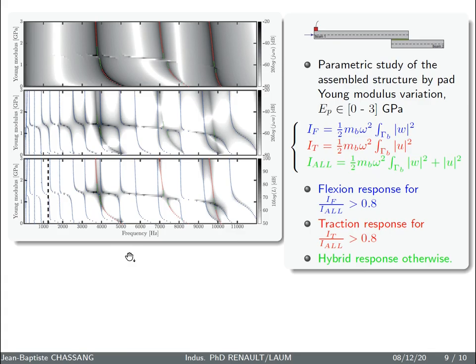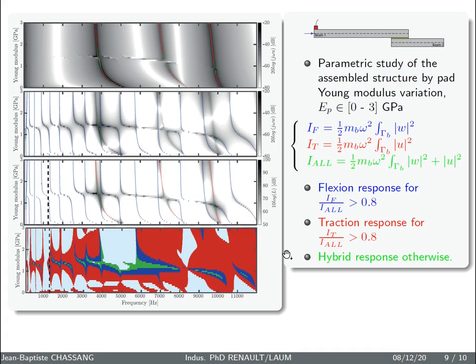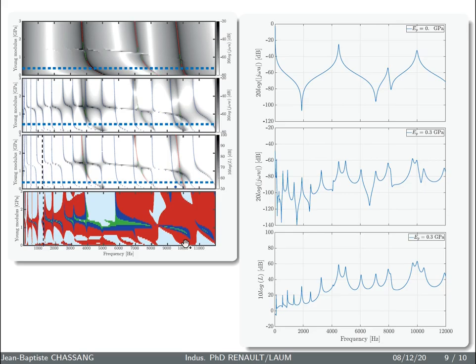Now let's have a look on the radiation map, where the acoustic radiation zone is around 1.5 GPa, where hybrid movements are present. The last map represents a response zone either in traction in red, bending in blue, or in hybrid in green.